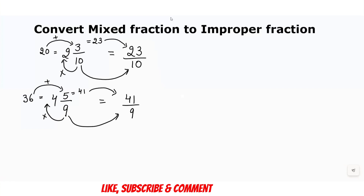The multiplication and addition steps shown are for your understanding — if you already know the method, you can directly write the answer. For example, 15 and 7 by 3: multiply 3 by 15 to get 45, then add 7 to get 52. You can directly write 52 over 3. So this fraction equals 52 over 3.